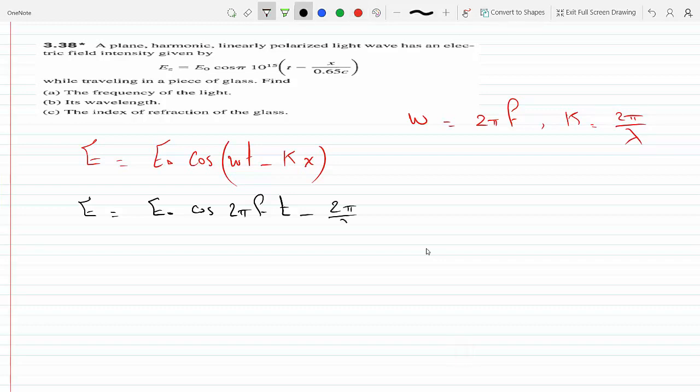So I replace k with 2π over lambda and Omega with 2πf. Now what I could do is factor out 2πf.